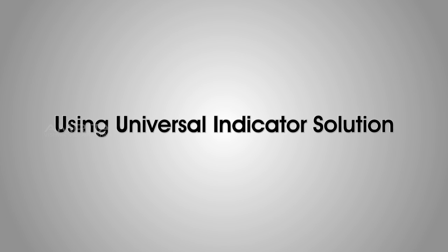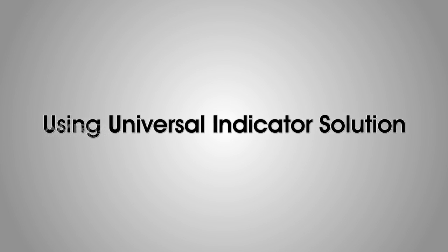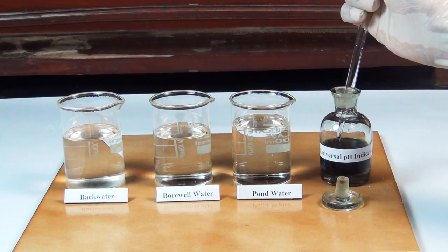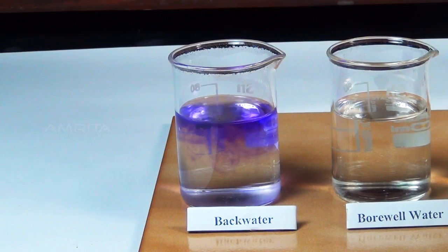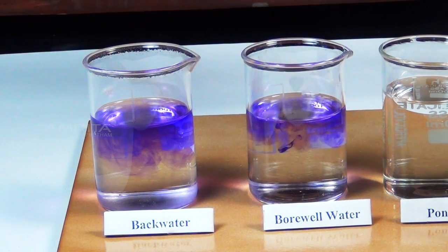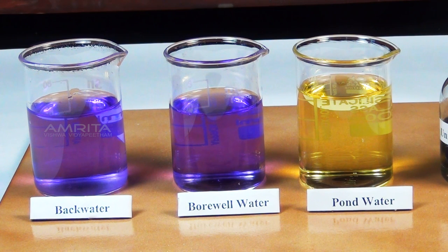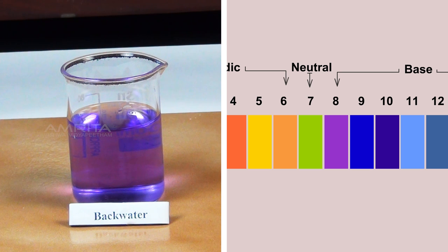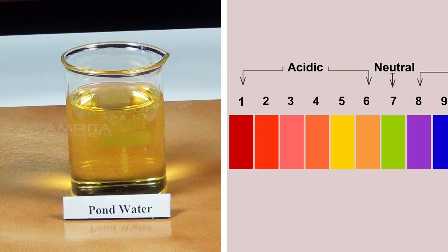Let's check the pH of the water sample using universal indicator solution. Using a dropper, take some universal indicator solution. Put 5 drops of indicator solution into the beaker that contains the water sample. Note the color developed and compare it with the color chart. We can observe that back water and borewell water has pH 8 and pond water has pH 5.